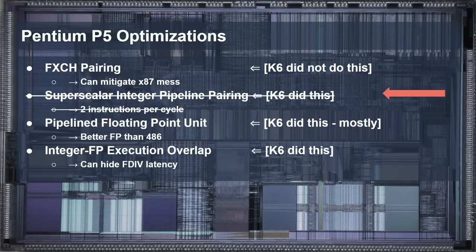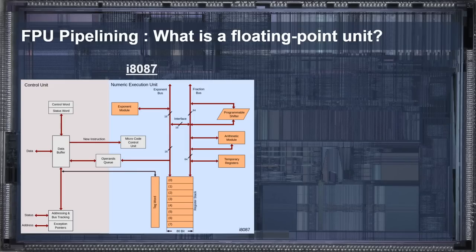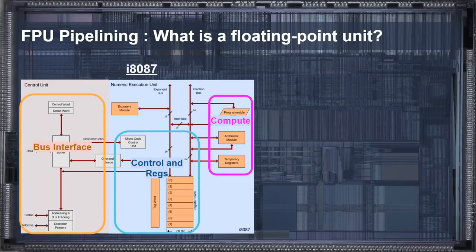The only two remaining optimizations are again related to the floating-point unit. So what about floating-point performance in general? To answer that, we can look to the original 8087, a math coprocessor which could do floating-point computations in hardware. It consisted of three main parts: a bus interface for communicating with the 8086 processor and attached memory; a control and register section responsible for conducting operations, which also housed the eight floating-point stack registers; and finally the compute section, where all of the math was actually done.